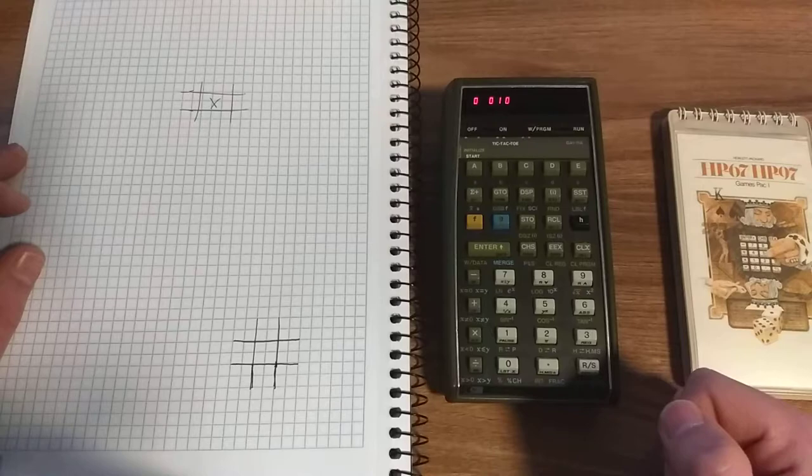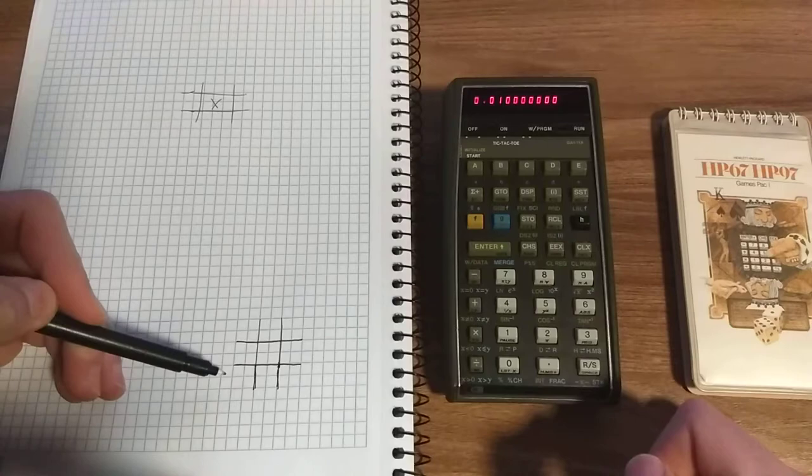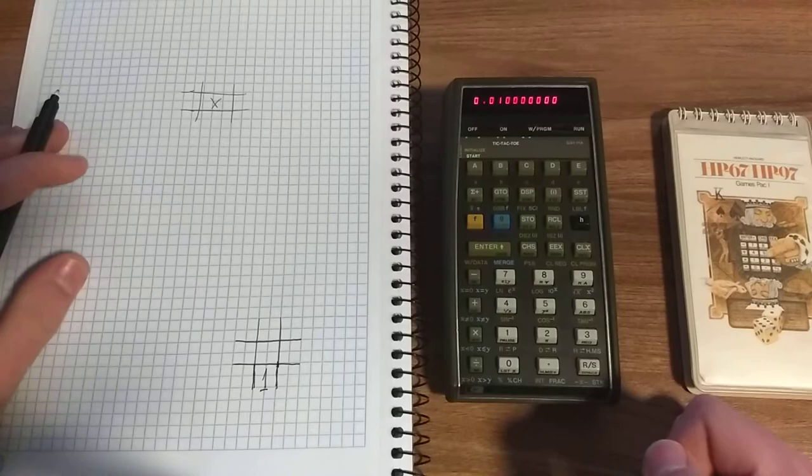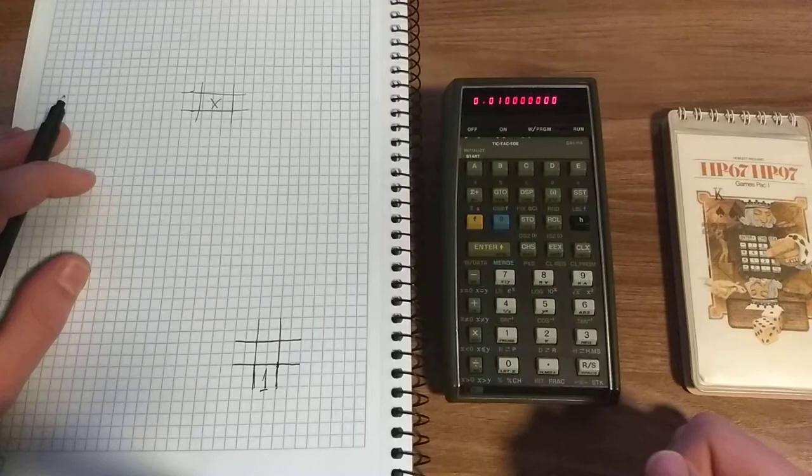Now we have 0.01. This means on the bottom line, position one is the calculator's move. The calculator is player one, and I'm player two.